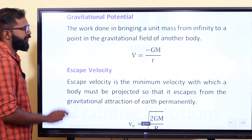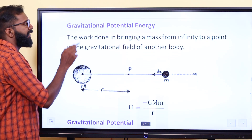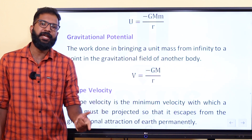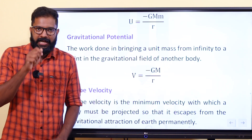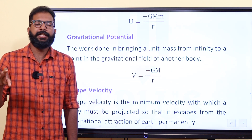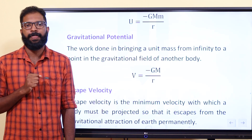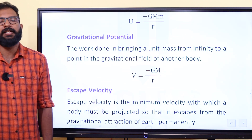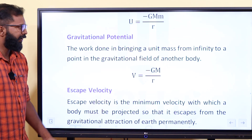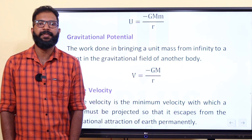Next: gravitational potential. The work done in bringing a unit mass from infinity to a point in the gravitational field of another body. When we think about gravitational potential energy versus gravitational potential — the formula is V = −GM divided by r.